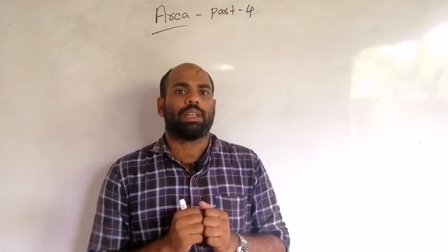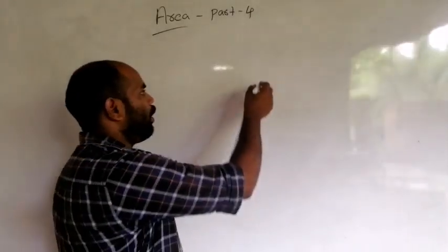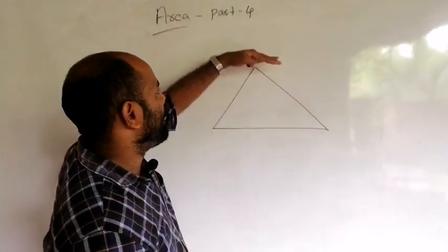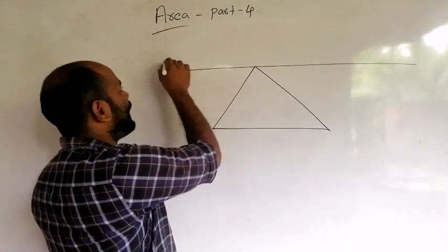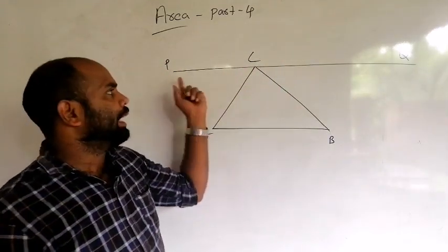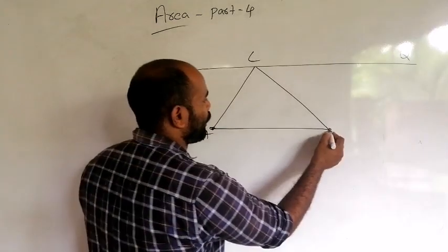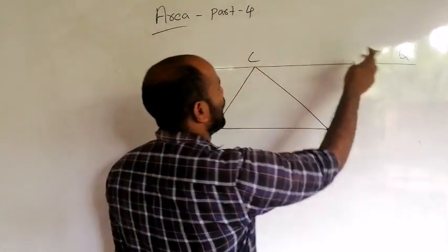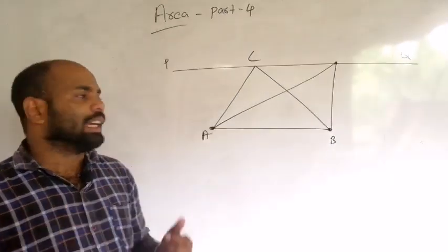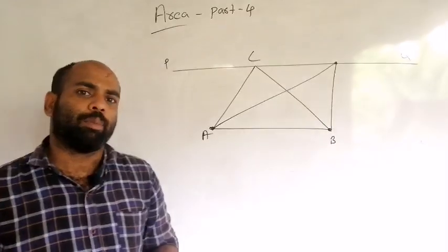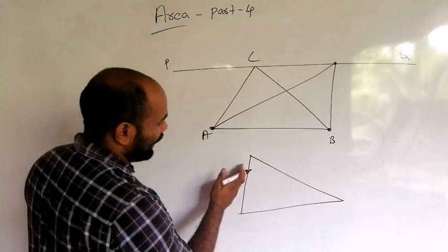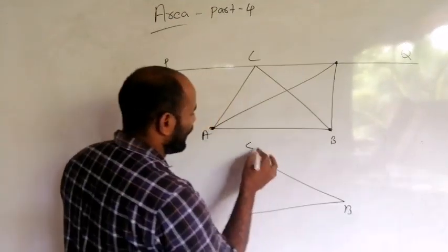In the first class, we have studied one or two things and did a quick review. In the first class, we have studied a triangle and the same area of a triangle. In this class, we have studied a parallel line. We have studied a triangle in the same area, and a parallel line of a triangle. I have a parallel line here.